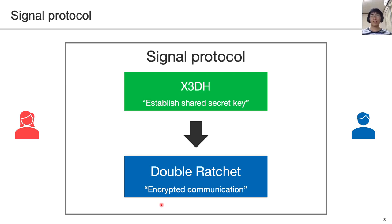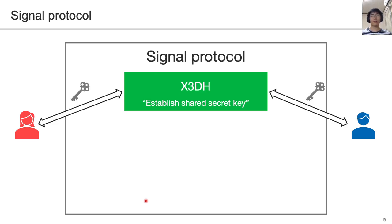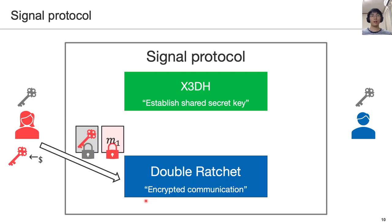Let's see how the Signal protocol works. The Signal protocol consists of two phases. First, Alice and Bob establish the shared secret key via the X3DH protocol. Then, they start the actual encrypted communication via the double ratchet protocol. When Alice sends messages, she chooses a new secret key, shown in red, and encrypts the messages and the key in this way.